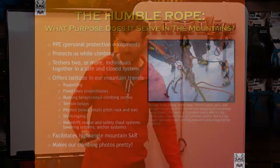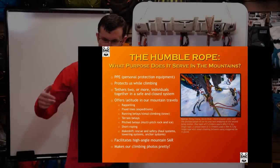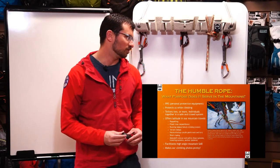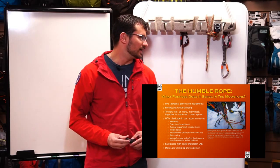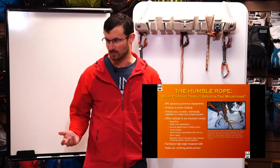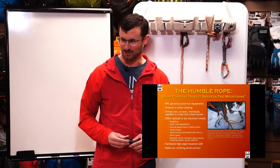So the humble rope — what purpose does it serve in the mountains? It's personal protection equipment. It protects us while climbing, tethers two or more individuals together in a closed system, and offers a lot of latitude in our mountain travels — such as repelling, fixed lines for expeditions where the Prusik and auto blocks come in handy, running belays, simul climbing, terrain belays where we weave the rope around different rock features, pitched belays such as multi-pitch rock and ice climbing, short roping, makeshift rescue and safety systems, haul systems, lowering systems, multipoint anchor systems, high-angle mountain rescue, and it makes our climbing photos look pretty.